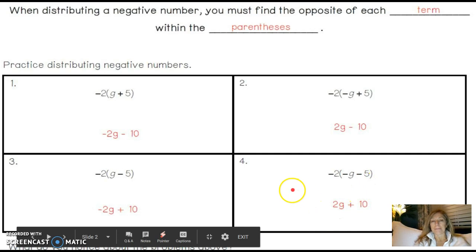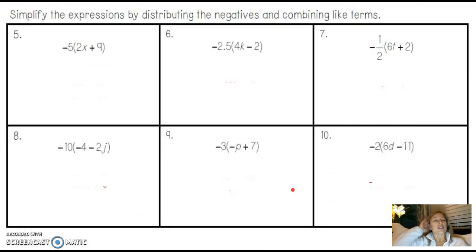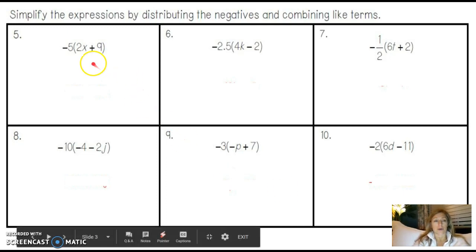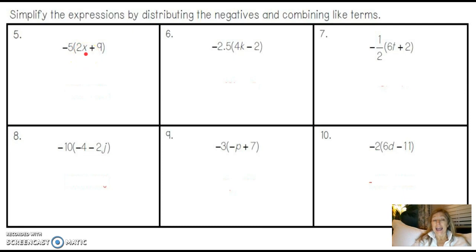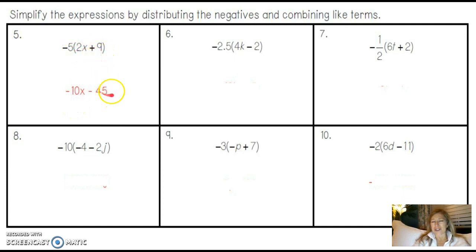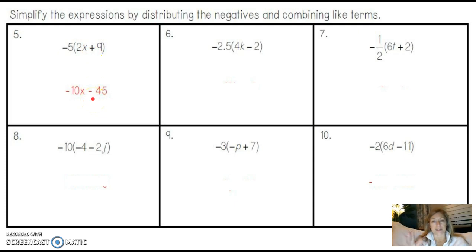Let's try a bunch of these — simplify the expressions by distributing the negatives and combining like terms. This is a negative so 5 times 2x is 10x, but because 2x was positive my answer will be negative 10x. Now 5 times 9 is 45 — I always do the multiplying first and then figure out the sign. The opposite of a positive 9 is negative, so it's minus 45. In the next one, a negative is being multiplied by a positive first term, so we must take the opposite.